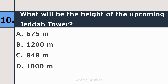Tenth question: what will be the height of the upcoming Jeddah Tower? Options: 675 m, 1200 m, 848 m, or 1000 m? The correct answer is 1000 meters, that is 1 kilometer. After completion, this will become the tallest building in the world.